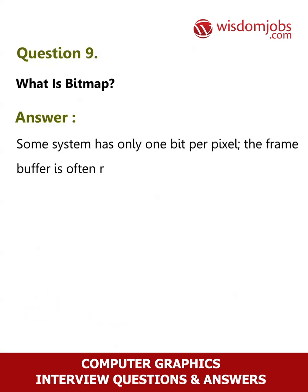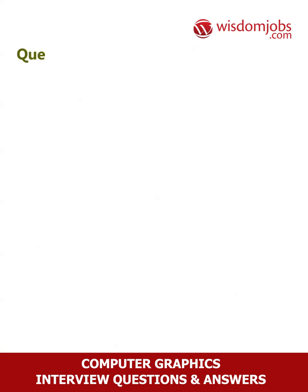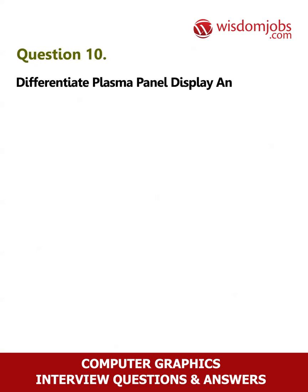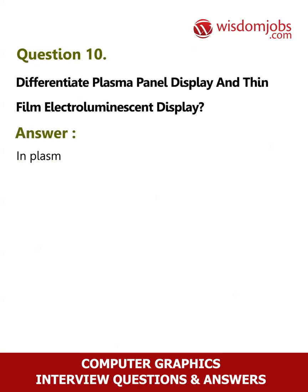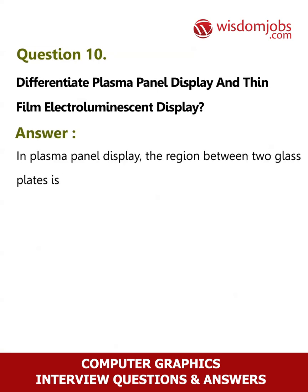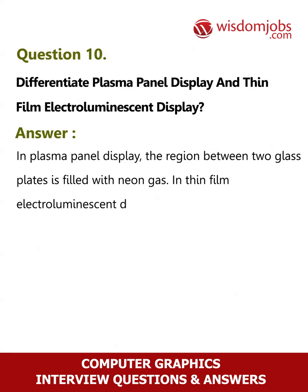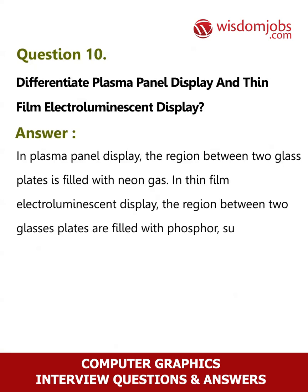Question 9: What is bitmap? Answer: Some systems have only one bit per pixel; the frame buffer is often referred to as a bitmap. Question 10: Differentiate plasma panel display and thin film electroluminescent display. Answer: In plasma panel display, the region between two glass plates is filled with neon gas. In thin film electroluminescent display, the region between two glass plates is filled with phosphor, such as zinc sulfide doped with manganese.